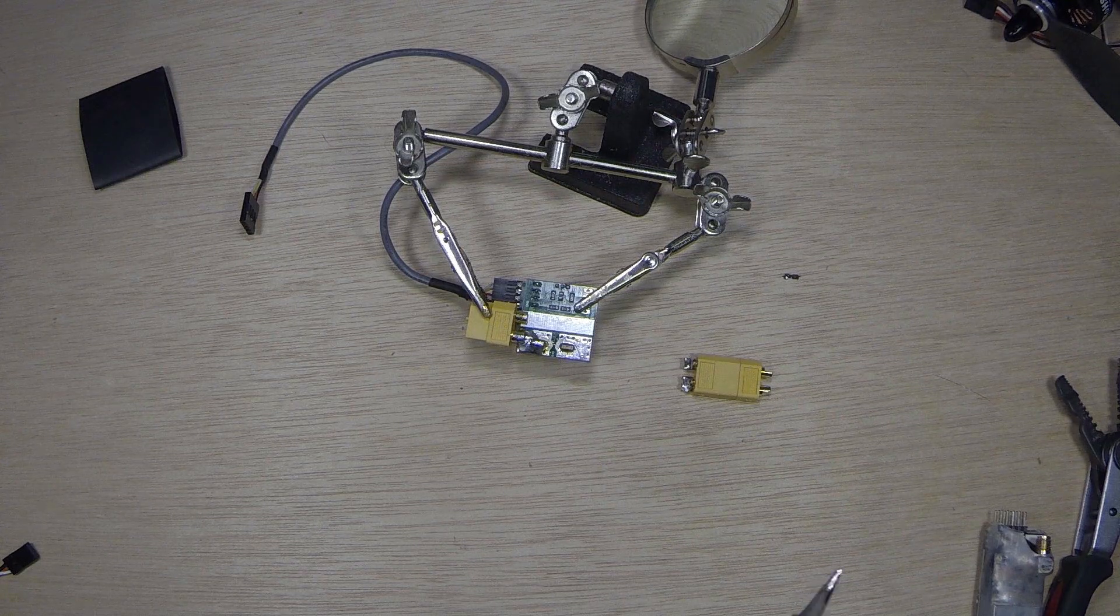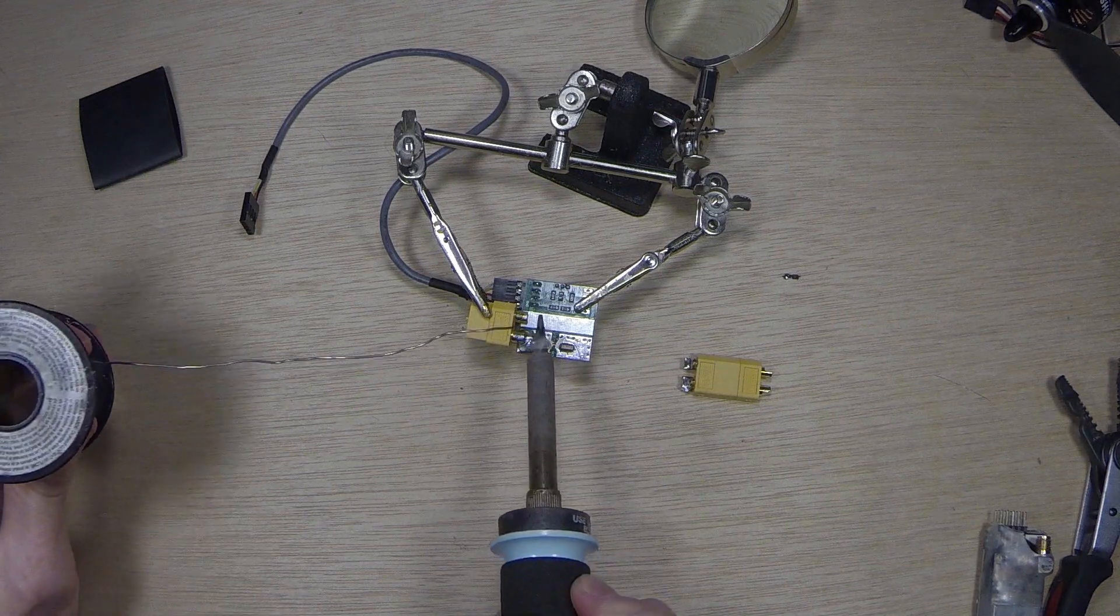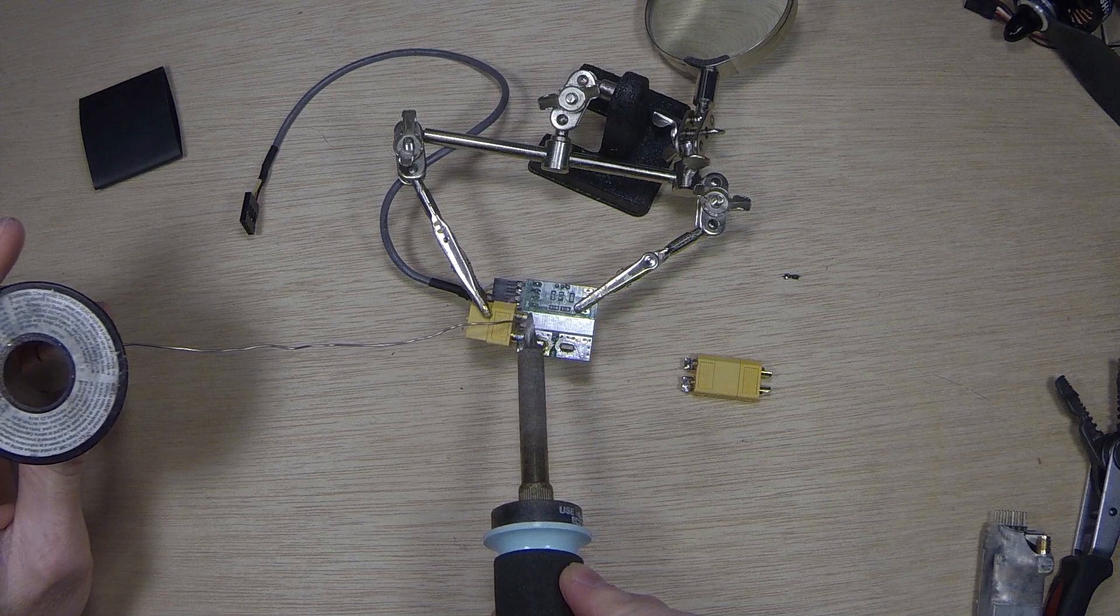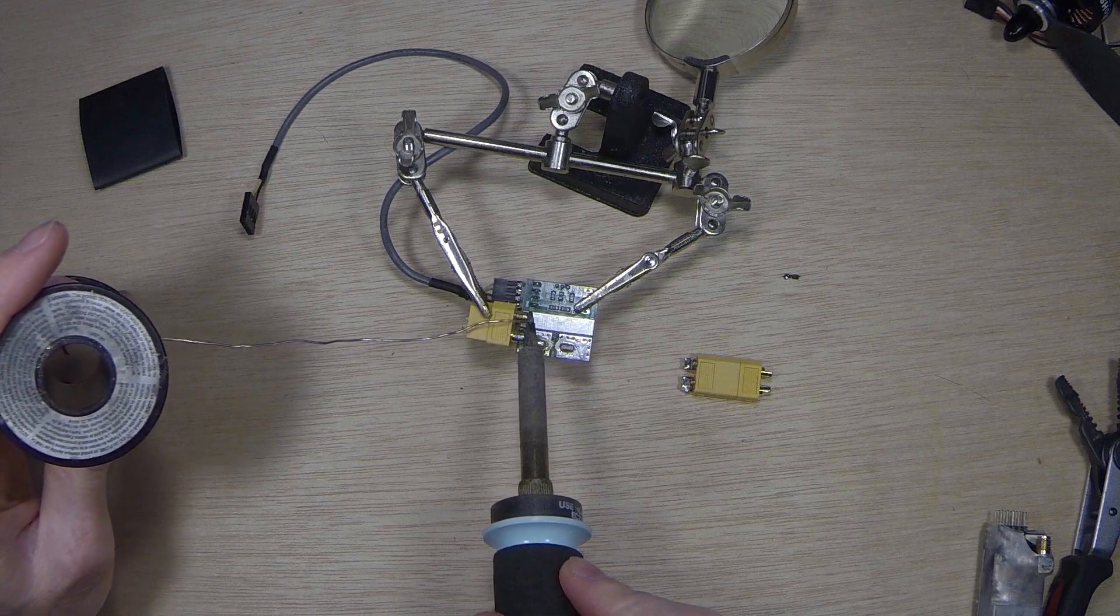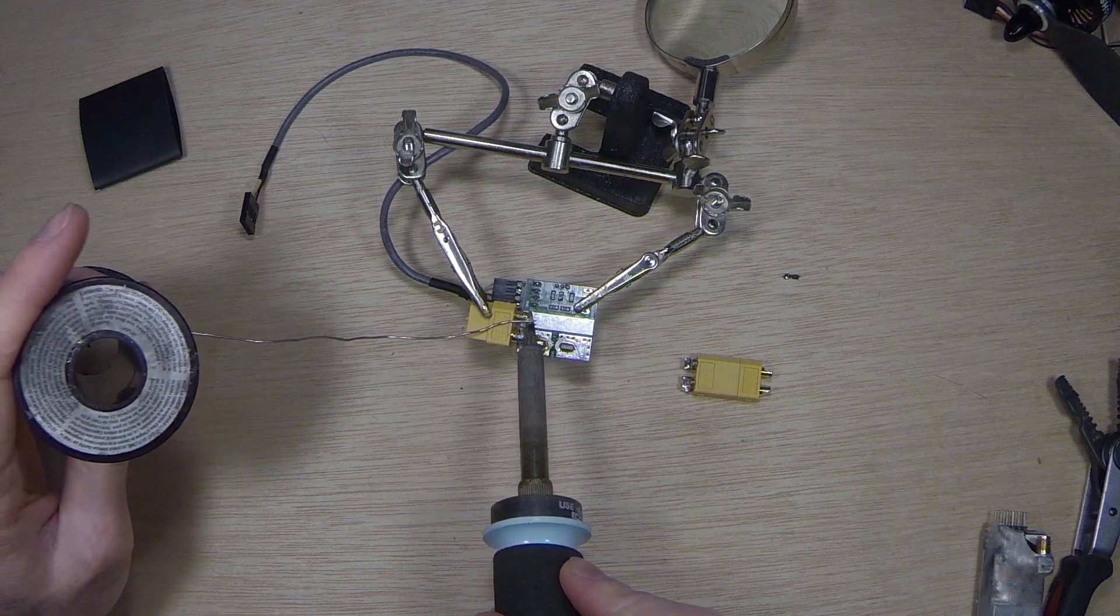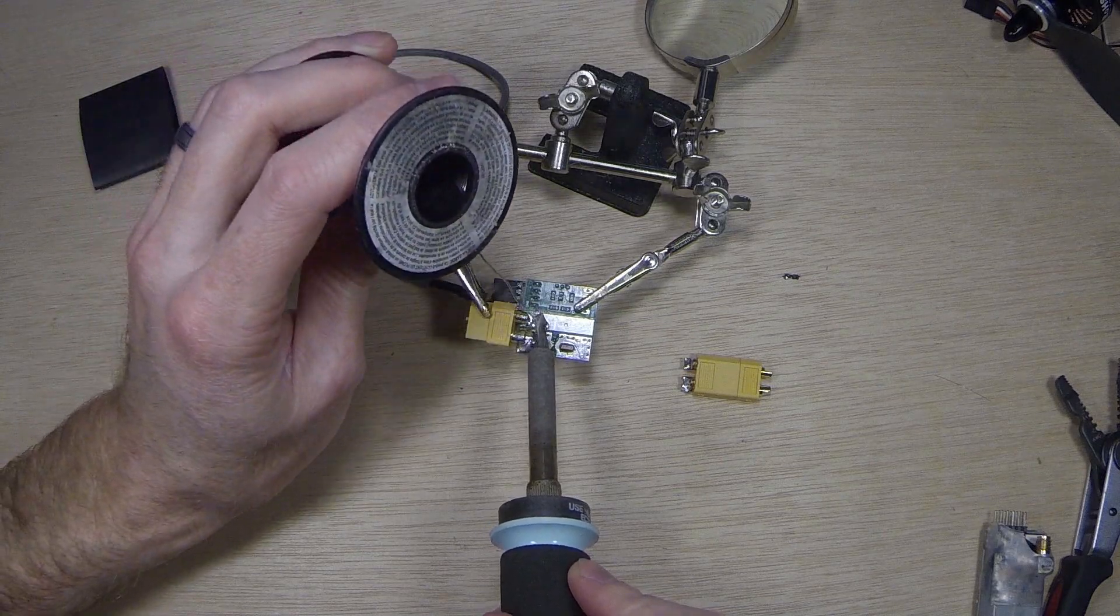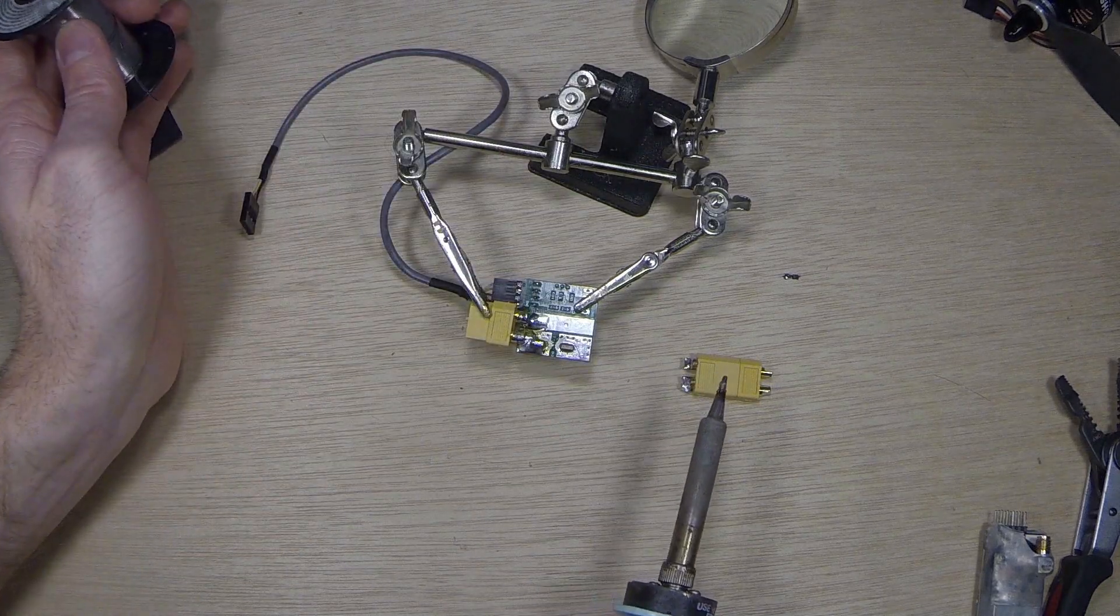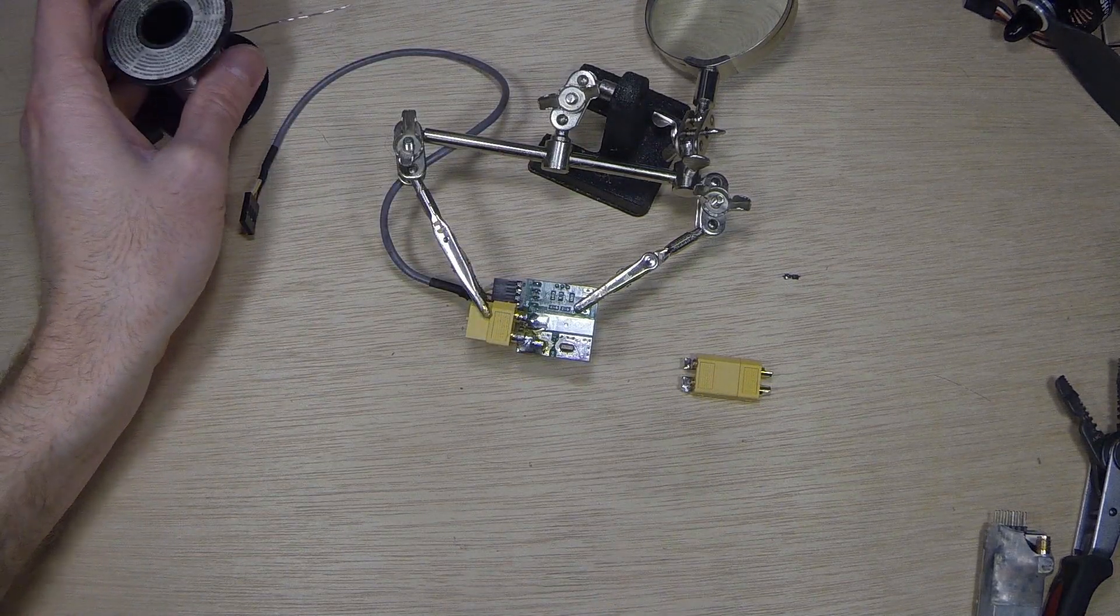Once that's in place, you can start applying heat and start melting your solder into place here. I like to be very generous with my soldering application because you don't want a failure in a section like this. There's one side. We'll let it cool.